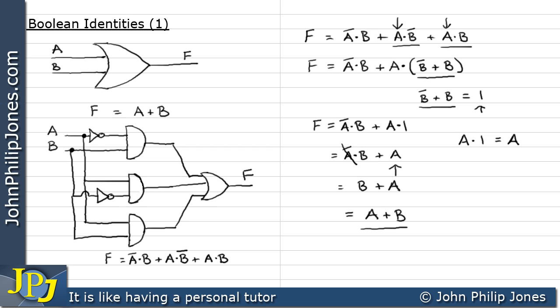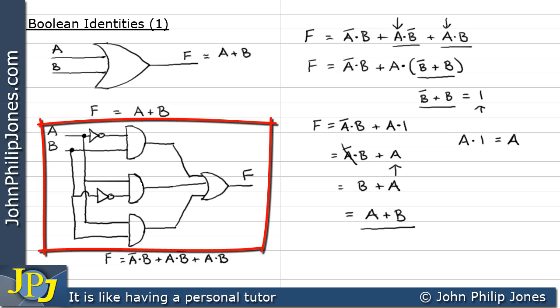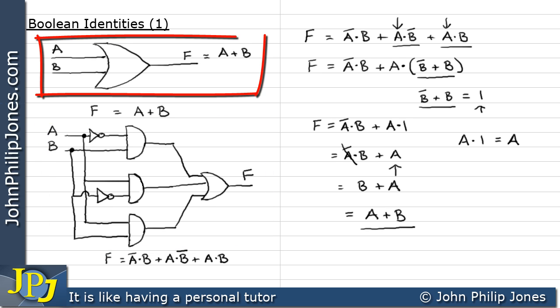Now, A or B here, we can see, in fact, is what we have up here for an OR gate. Because F is A or B for a two input OR gate. So, if I've now managed to minimize this Boolean expression here, which is the logic representation of this combinational logic circuit, then I've proved that, in fact, this combinational logic circuit can be replaced by a two input OR gate.